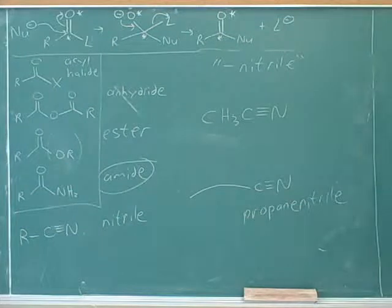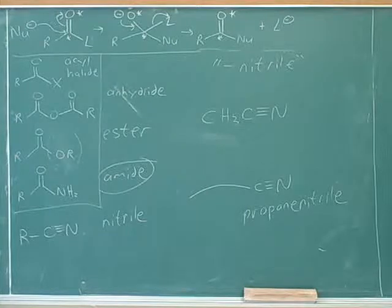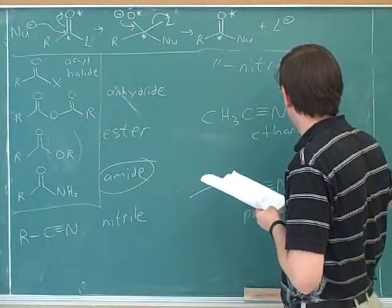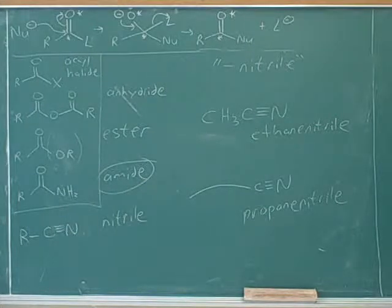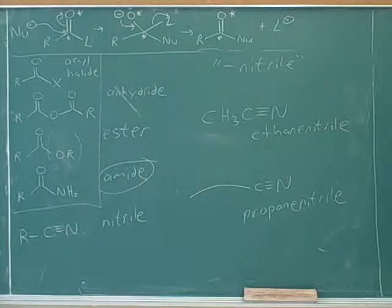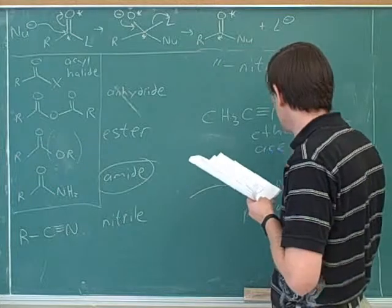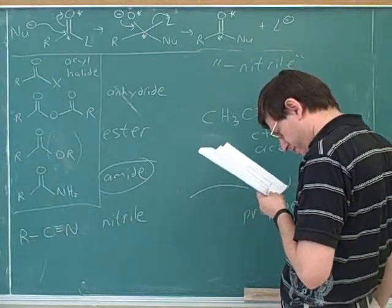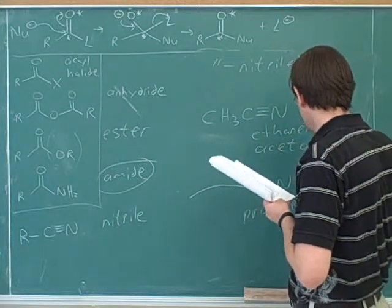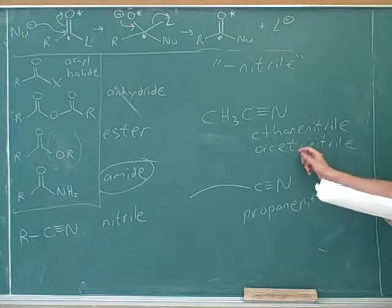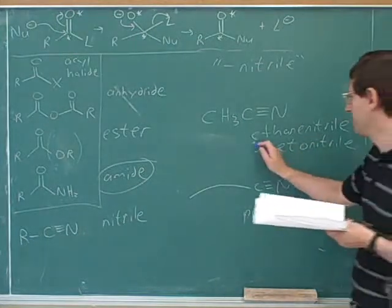And let's name this one. Ethenenitrile. Right. Now we know that for two carbons there's often a common name. The root we would use here is acet-. It turns out that this is acetonitrile — they stick the O in to make it more pronounceable. So acetonitrile would be the common name.